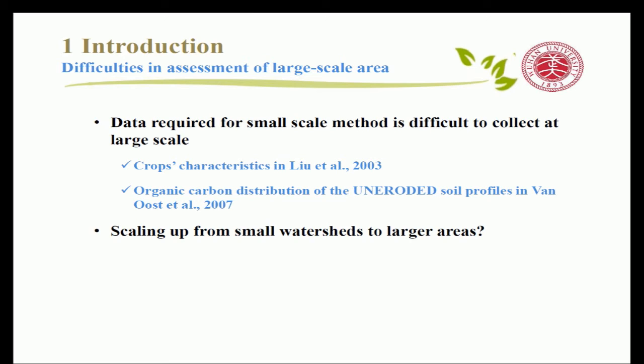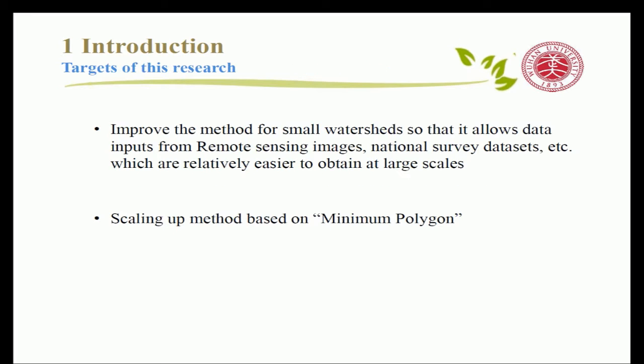The second difficulty is that the scale-up method from local scale to a larger scale is also very lacking. Correspondingly, there are two targets of this research. First, we try to improve the method for small watersheds so that it allows data inputs from remote sensing images and national survey datasets, which are relatively easier to obtain at large scales. The second target is to develop a scale-up method based on the concept of minimum polygon.